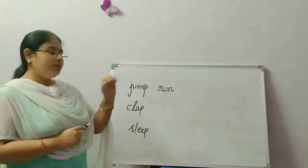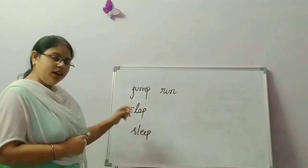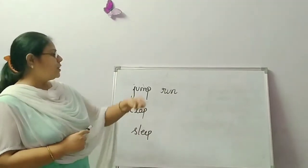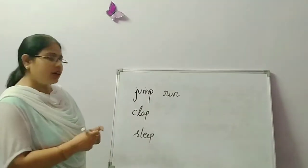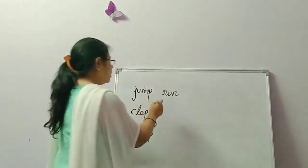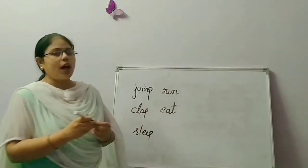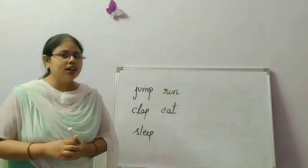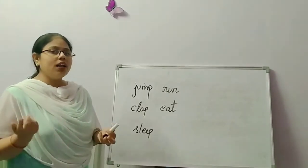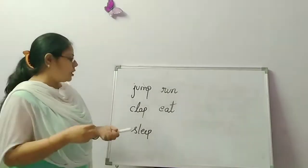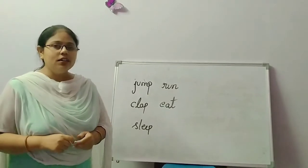So what have you done so far? You jumped, then clapped, then slept, and then ran. What's next? You have to eat. You have to pretend as if you are eating something. Like this — you are eating.